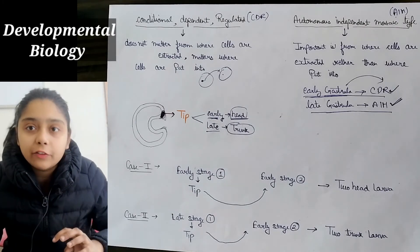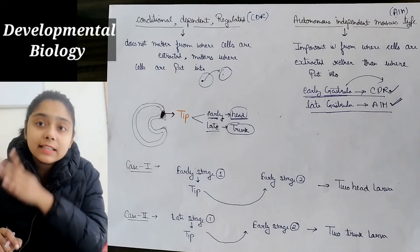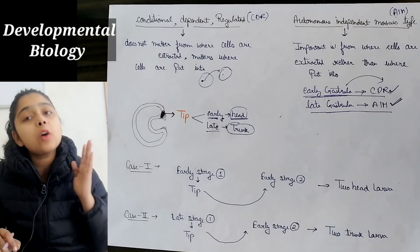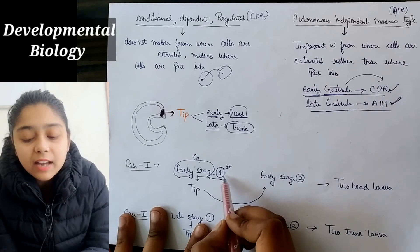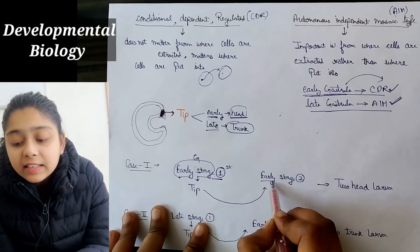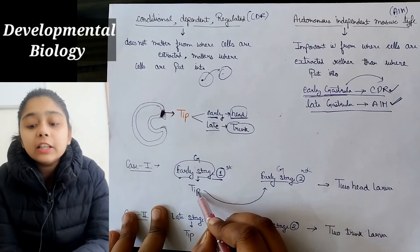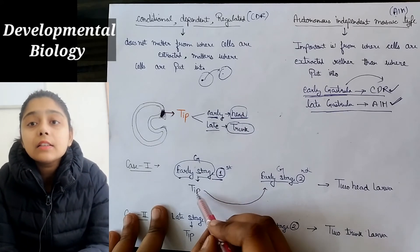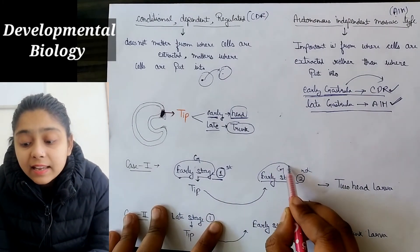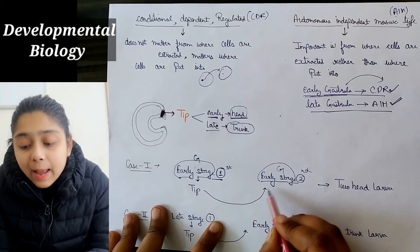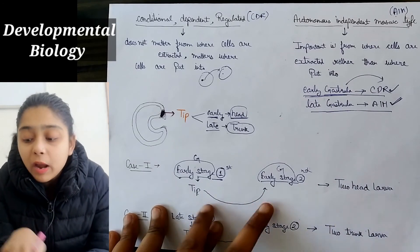The cells at the tip are always specified for head formation. So if we pick tip cells from the early gastrula stage of the first embryo and place them into a second embryo, there will be two head-forming regions. As a result, a two-headed larva is produced — because both the original tip of the second embryo and the transplanted tip each form a head.